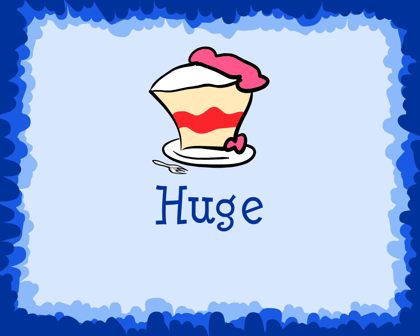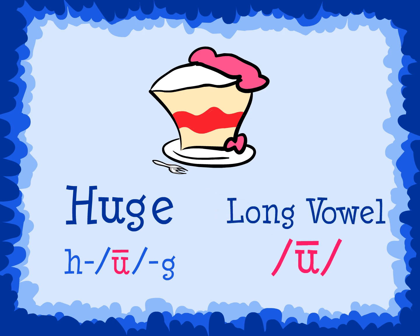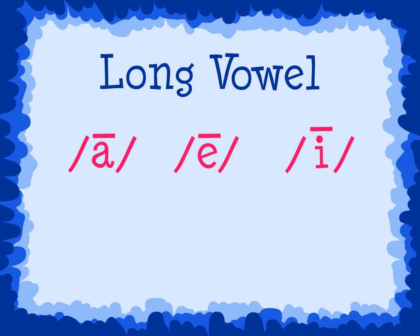Let's try one more. If we add an E to the end of the word 'hug,' we would get the word 'huge.' The way that you pronounce each letter in the word is H, U, J. Again, we don't pronounce the E at the end. All the E does is change the way that we pronounce the U from the short vowel sound of 'hug' to the long vowel sound of 'huge.' The long vowel sounds are A for the letter A, E for the letter E, I for the letter I, O for the letter O, and U for the letter U.